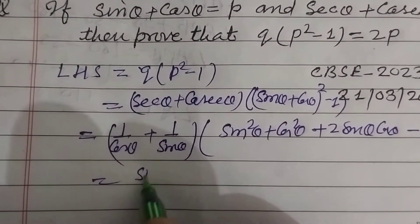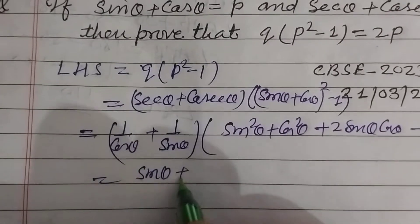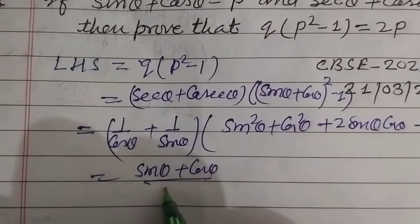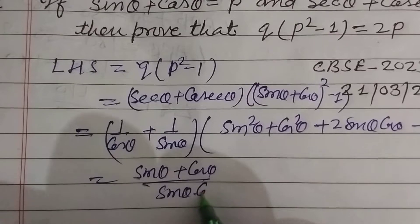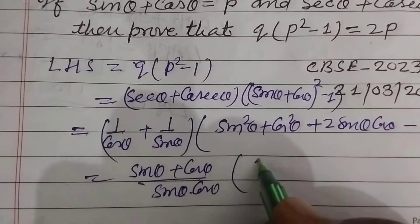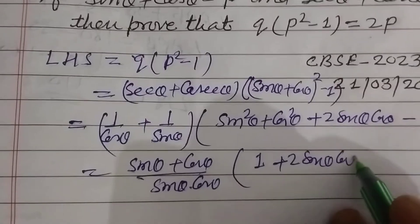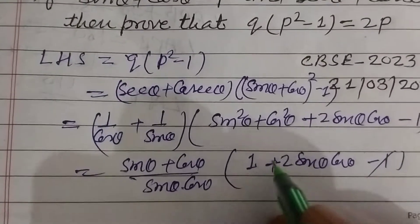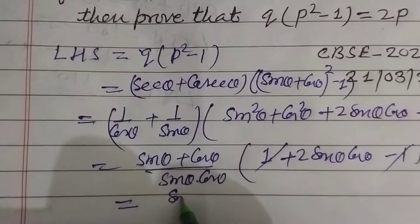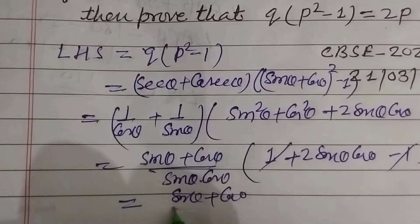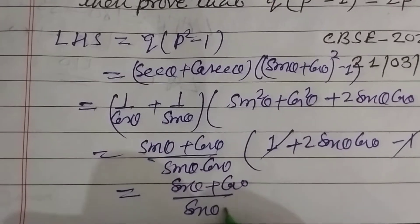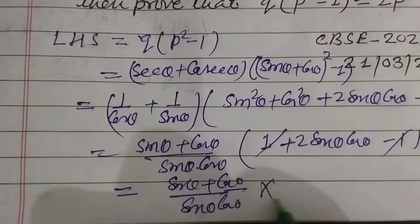And this is 1 plus 2 sin θ cos θ minus 1. 1 cancels here. Sin θ plus cos θ upon sin θ cos θ into 2 sin θ cos θ.